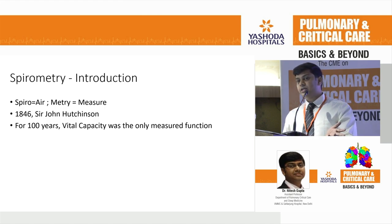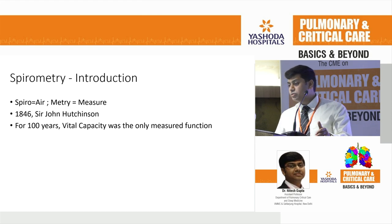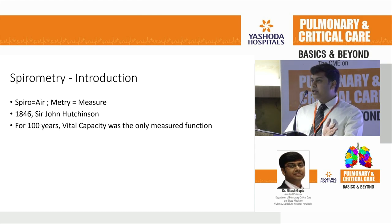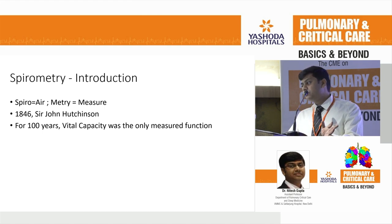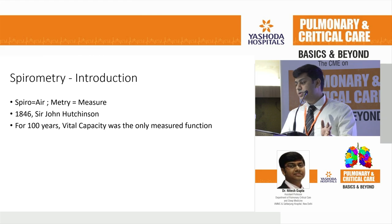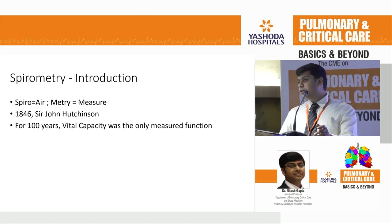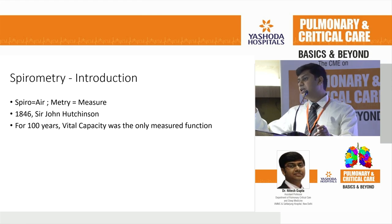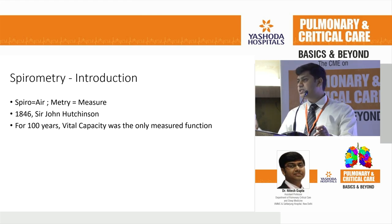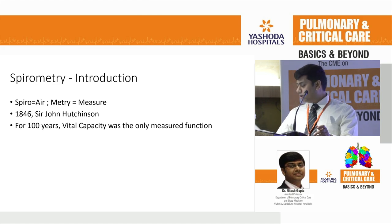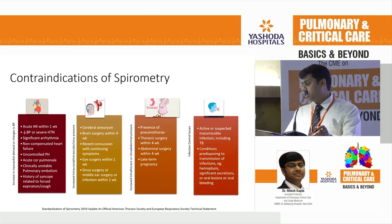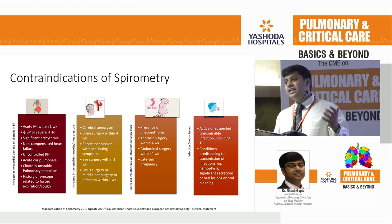Spirometry: 'spiro' means air, 'metry' means how you measure. It was introduced about 180 years ago by Sir John Hutchinson in 1846. For 100 years, until the 1940s, vital capacity was the only measured function. Sir John Hutchinson worked on many TB patients and found that the lung capacity of TB patients was less compared to healthy adults who lived longer — that is why it was named 'vital capacity.' It is only after the 1940s that FEV1, FEV0.6, SVC, and other parameters started gaining prominence.